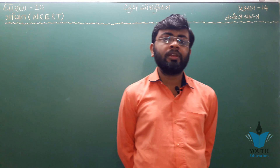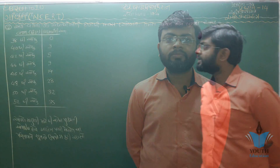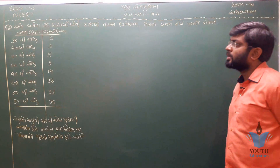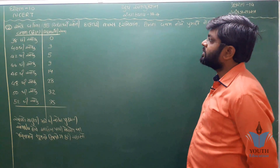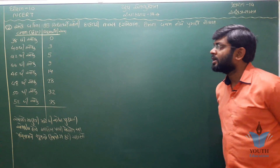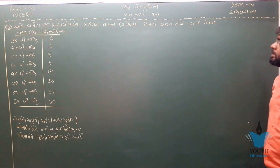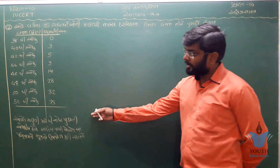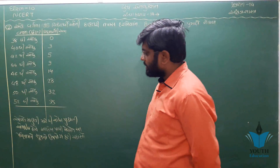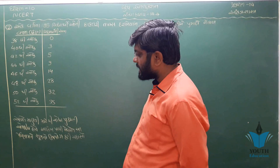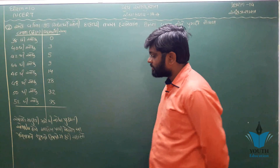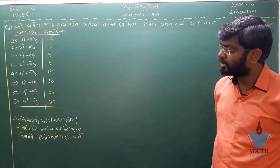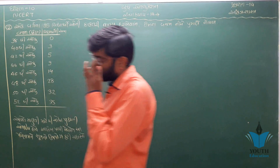એક વર્ગના વિદ્યાર્થીઓ ની ડૉક્ટરી તપાસ દરમ્યાન તેમના વજનની નીચે પ્રમાણે નોંધ થઈ. આપેલી માહિતી પરથી 'થી ઓછા' પ્રકારનું ઓજાઈ (Ogive) દોરવાની છે, અને આલેખ પરથી મળેલી આપણે સૂત્રનો ઉપયોગ કરીને ચકાસવાનું છે.